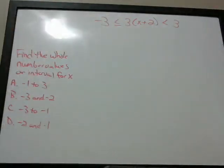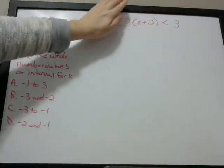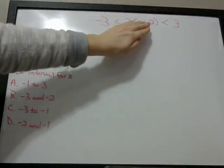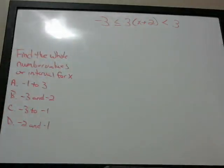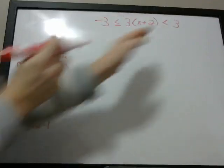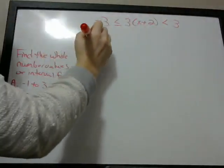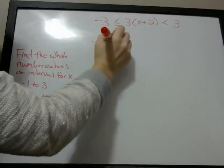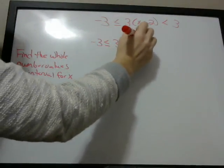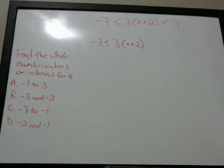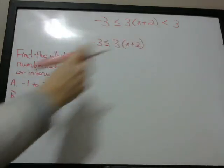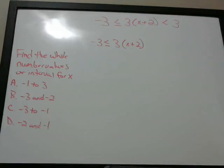So we have to solve this side and we also have to solve this side, and our value of x has to satisfy both of those. So the first thing we're going to look at is just the left-hand inequality, where we have negative 3 is less than or equal to 3 times (x + 2), and we're going to solve that for x. It's really just a basic algebra problem — we're just going to treat this essentially like an equal sign. We're going to use the distributive property.